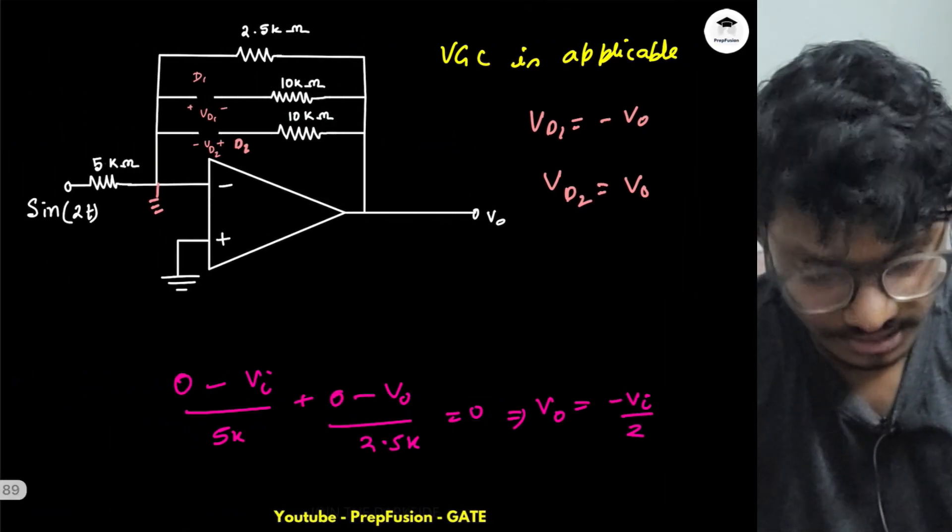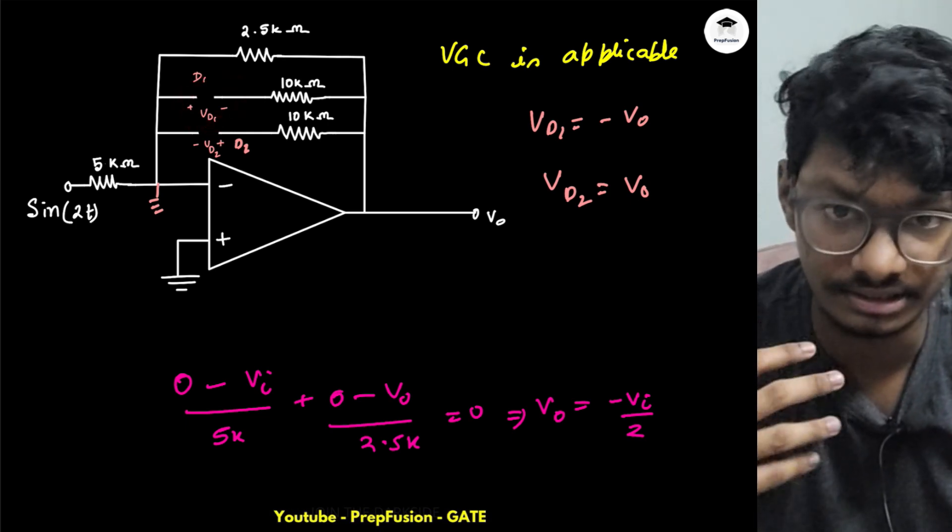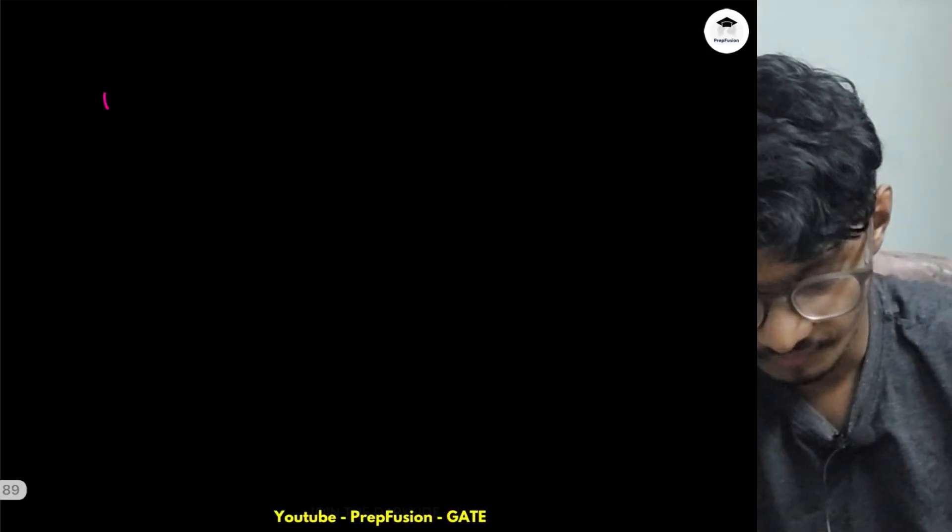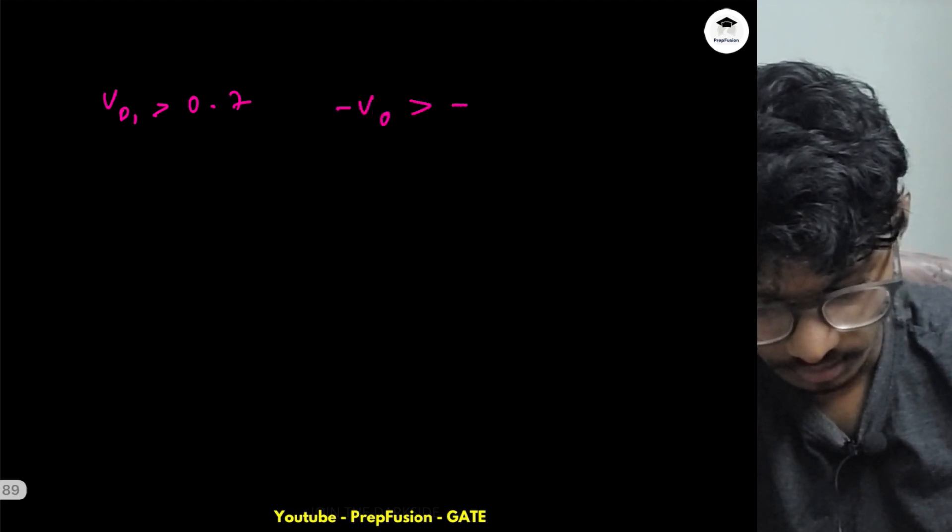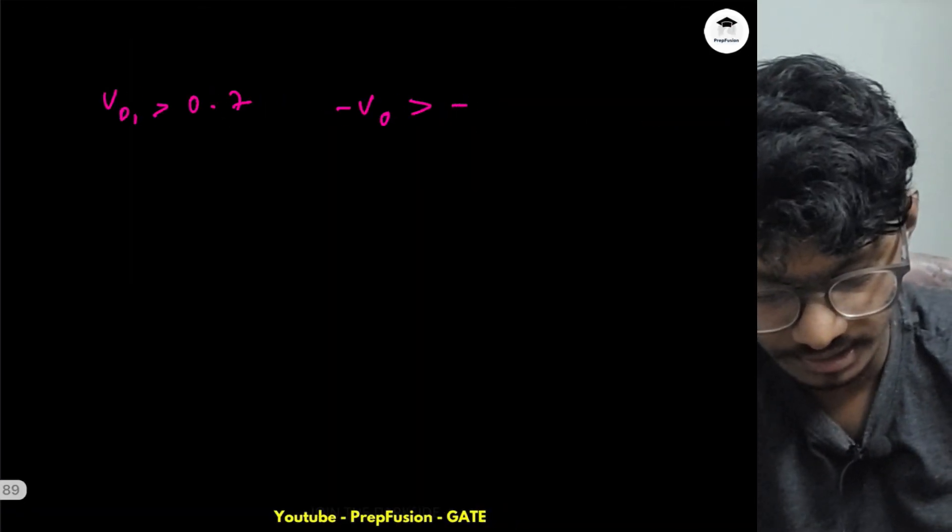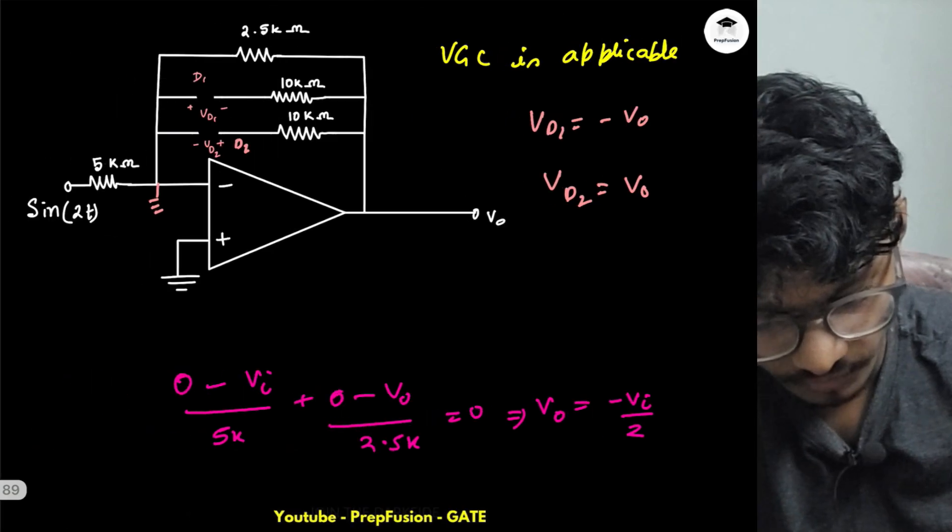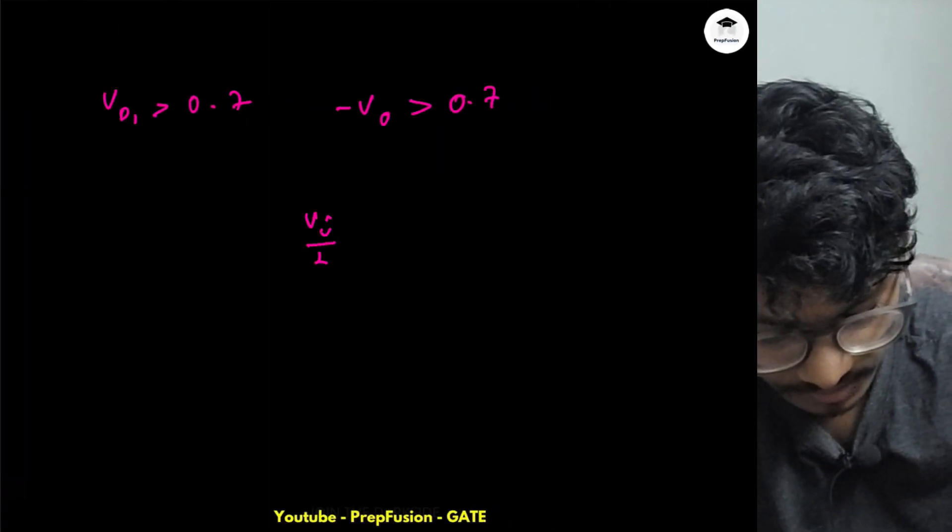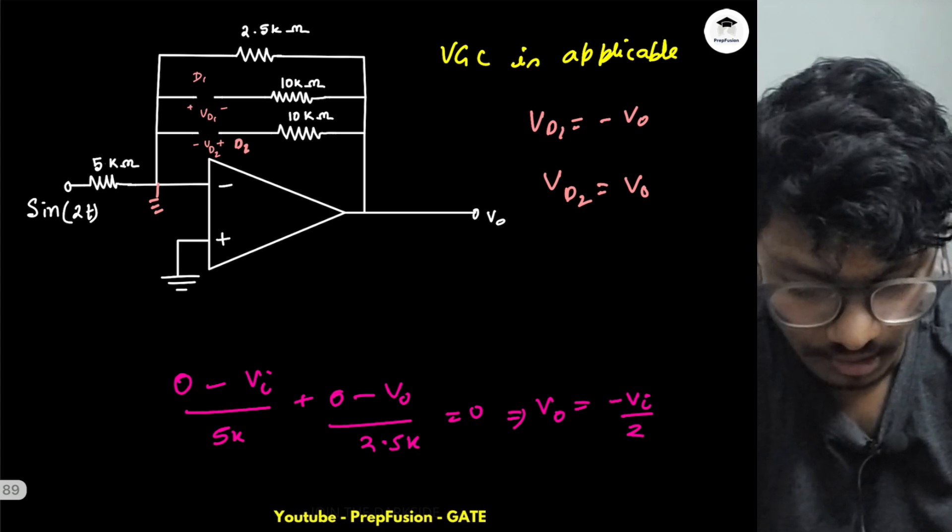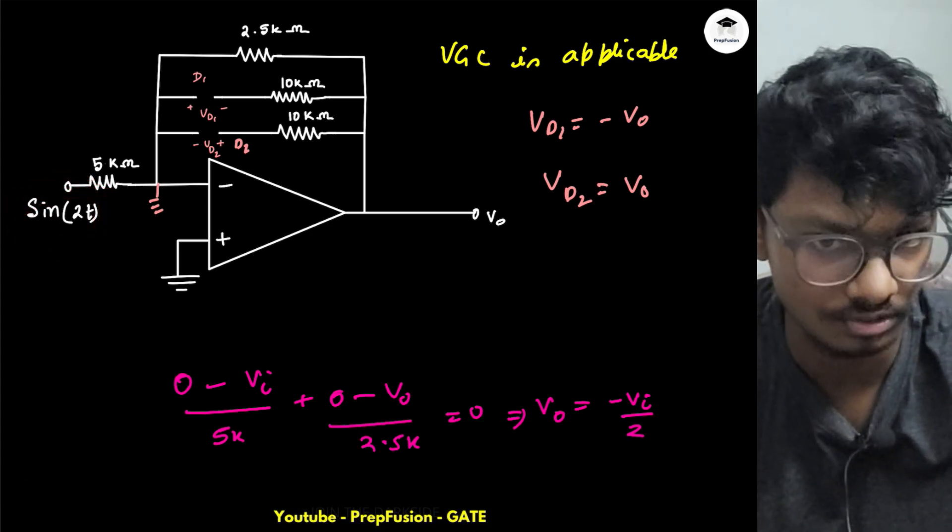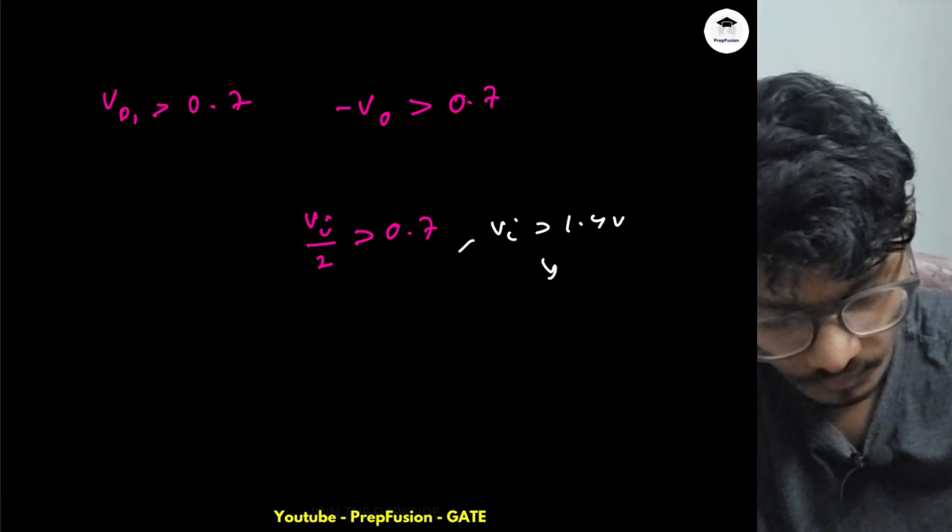For D1 to be on, its voltage needs to be more than 0.7 volts. So VD1 has to be greater than 0.7, or minus Vo has to be greater than 0.7. Since Vo is minus Vi/2, this becomes Vi/2 greater than 0.7, so Vi has to be greater than 1.4. Is that possible? It is never possible because the peak value for this sine wave is one volt. So it will never cross the one volt threshold. Not possible—D1 is always off.